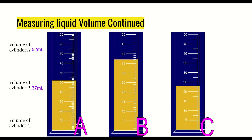For cylinder C, the volume is 23 milliliters. The intervals here are going up by 5s, which means the midpoint between marks represents about 2.5. So we're just past the 2.5 mark from 20, giving us approximately 23 milliliters. This type of scale can be a bit tricky, but cylinders like A and B are more common. Just be ready to pay attention to these different interval types.